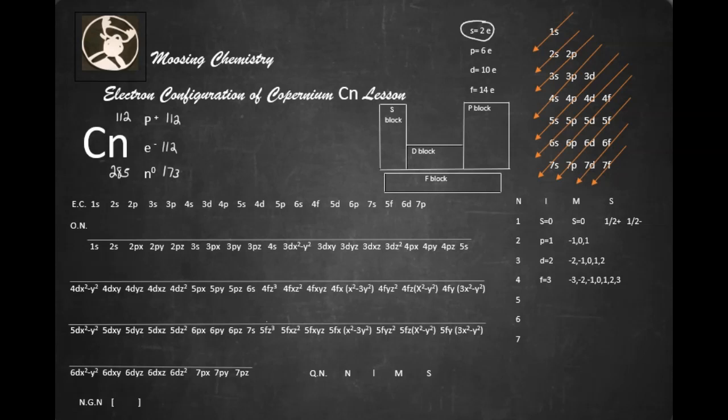Remember that s holds 2 electrons, p holds 6 electrons, d holds 10 electrons, and f holds 14 electrons. Remember that the lower shell, we do the Aufbau principle where we fill the lower shells first, and we move to the upper shells. And we're going to use a diagonal rule to do this.